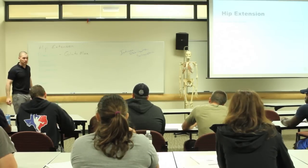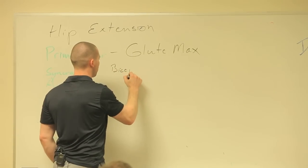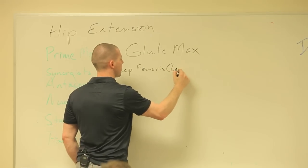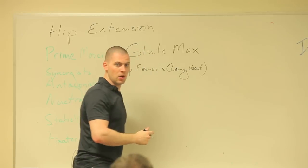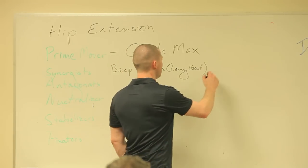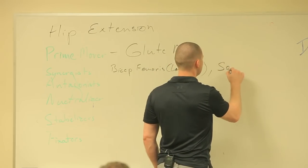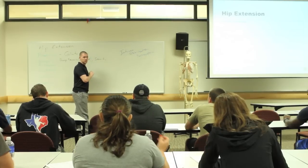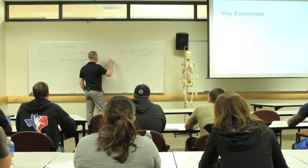Now let's go for the synergists. Biceps femoris long head — the short head only goes up to about halfway up on the femur, it doesn't actually cross the hip. So biceps femoris long head, semimembranosus, semitendinosus, and posterior adductor magnus.